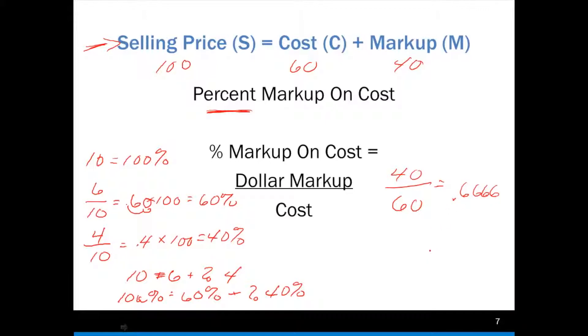That's a decimal, 0.6666, and if we multiply that by 100, we get 66.66%. Instead of actually plugging in to the calculator, all I can do is just take this decimal place and move it over 2 and end up with the same thing, 66.66%.